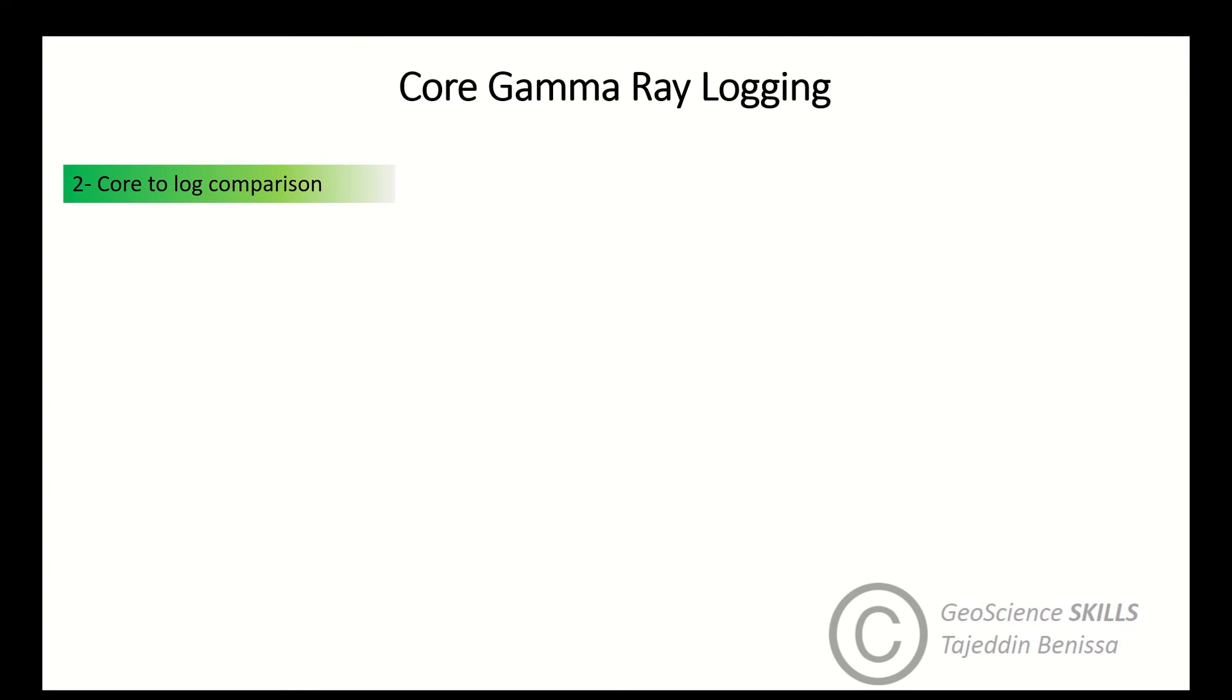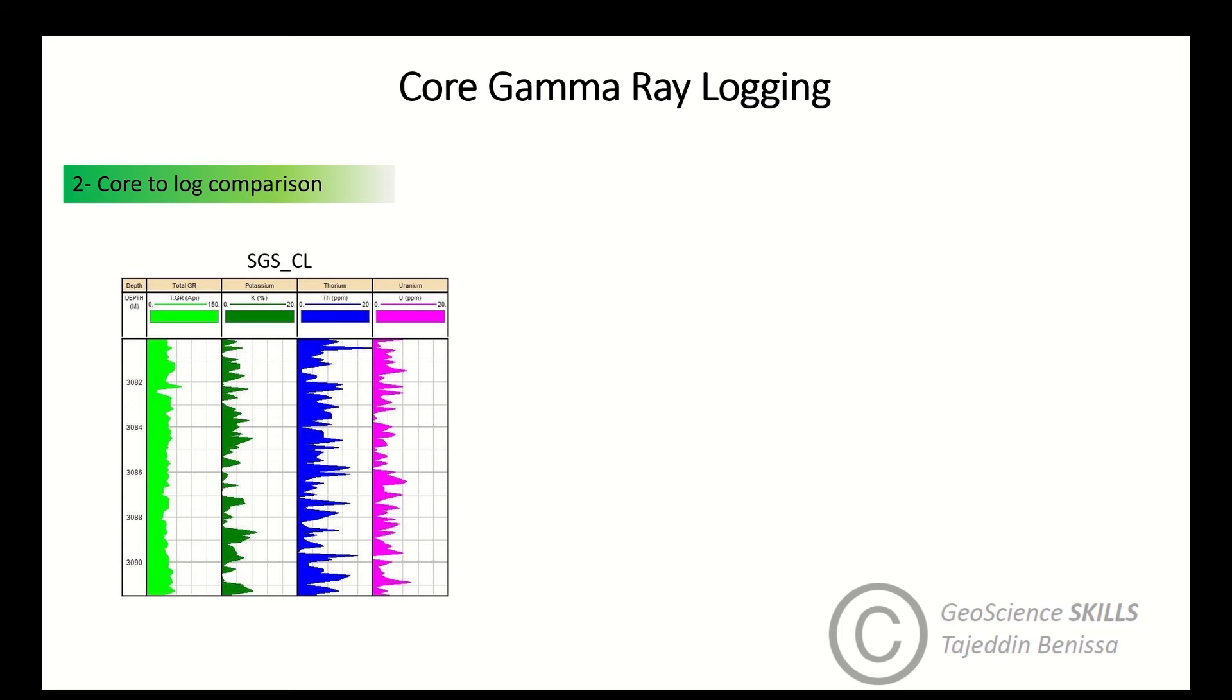The next step is core to log comparison. After logging, ask for spectral gamma ray plot to be printed from the instrument and compare the output core gamma log with spectral gamma ray from composite log that you must bring along with you to the core lab. The comparison enables you to identify the differences and changes.